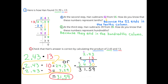C. Check that Hahn's answer is correct by calculating the product of 2 and 43 hundredths and 13. Product means multiply. One example is 2 and 43 hundredths times 13 can be broken down to 2 and 43 hundredths times 10, plus 2 and 43 hundredths times 3. 24 and 3 tenths plus 7 and 29 hundredths is 31 and 59 hundredths, so Hahn is correct.